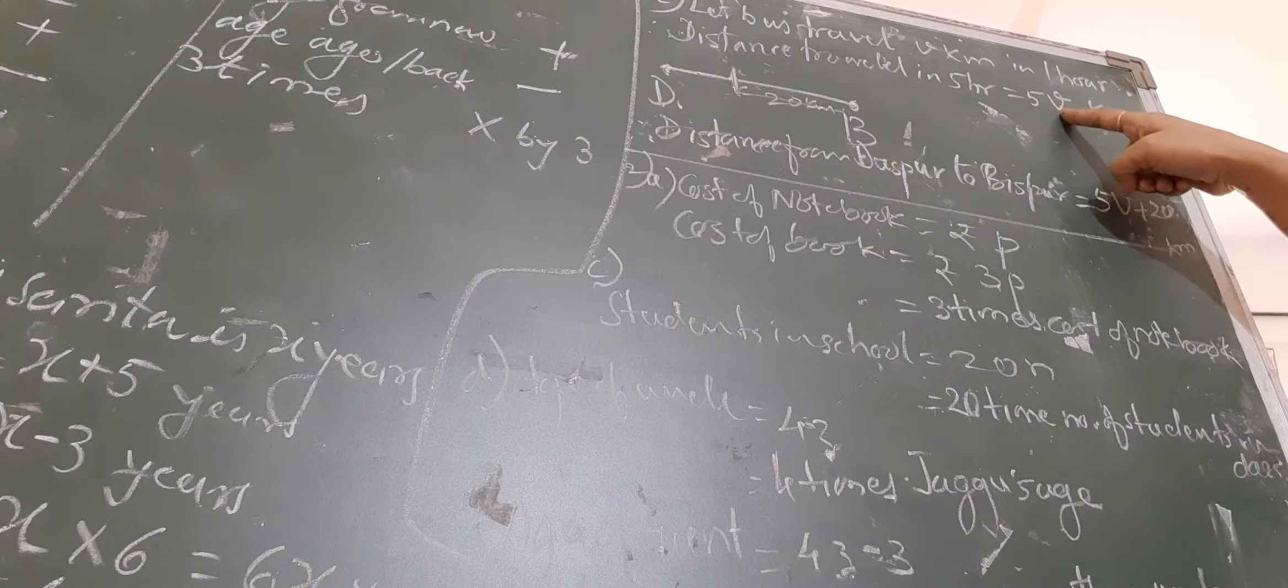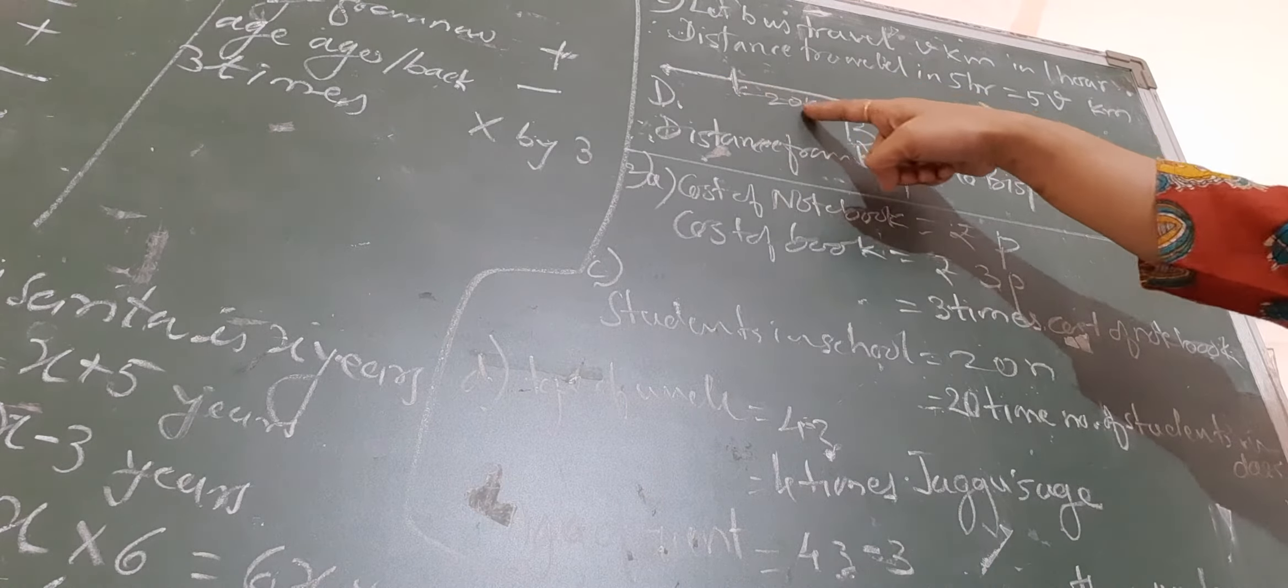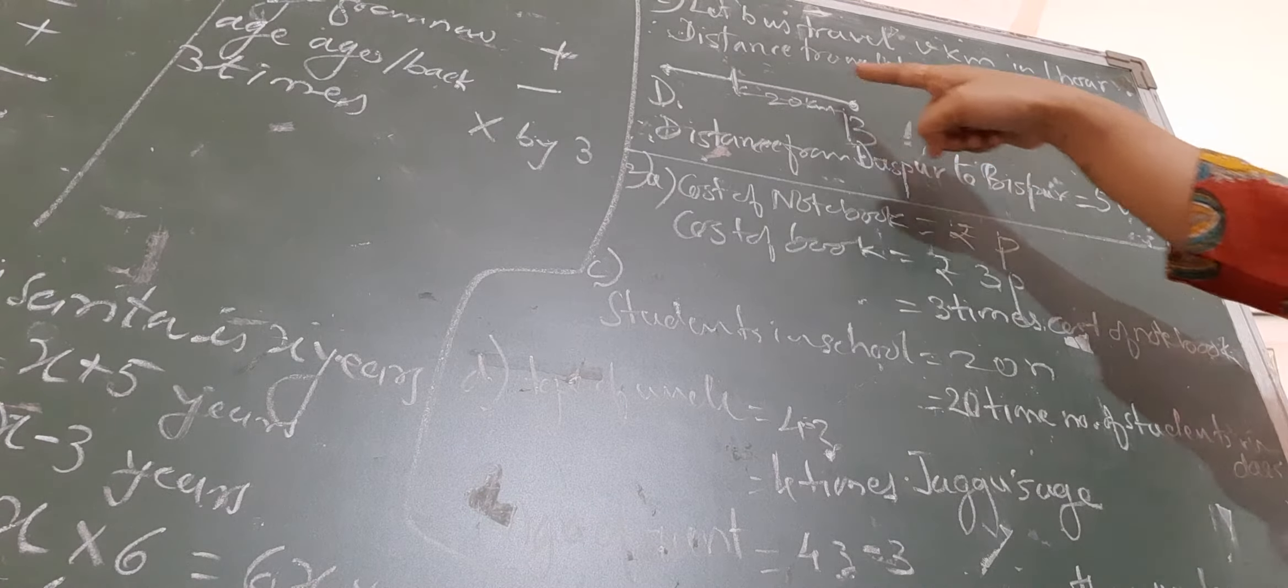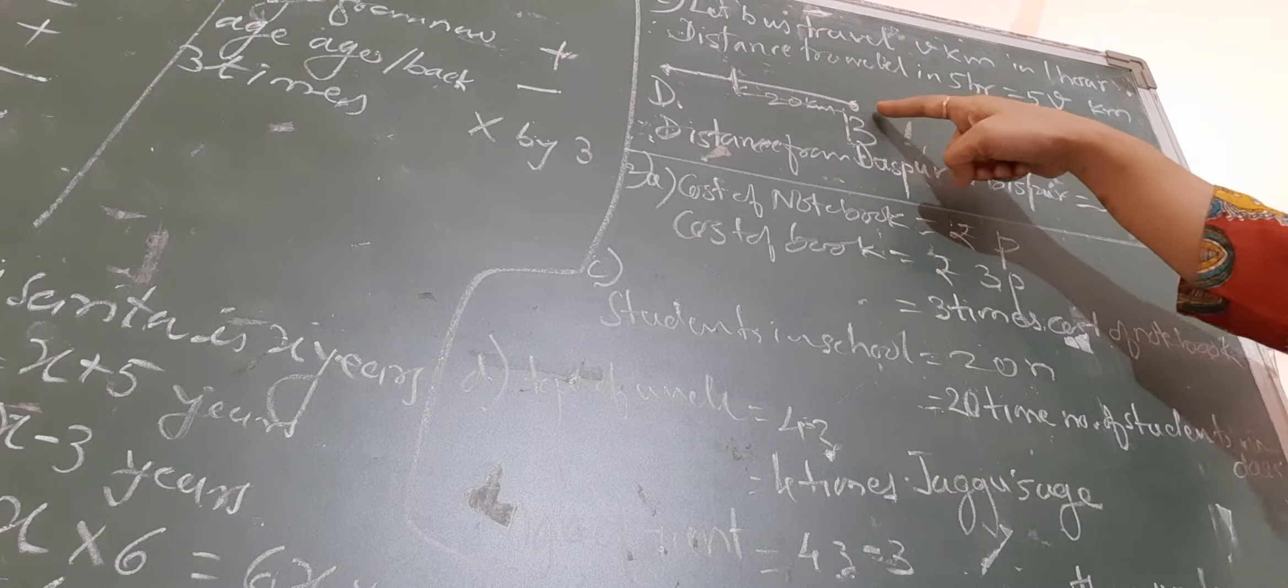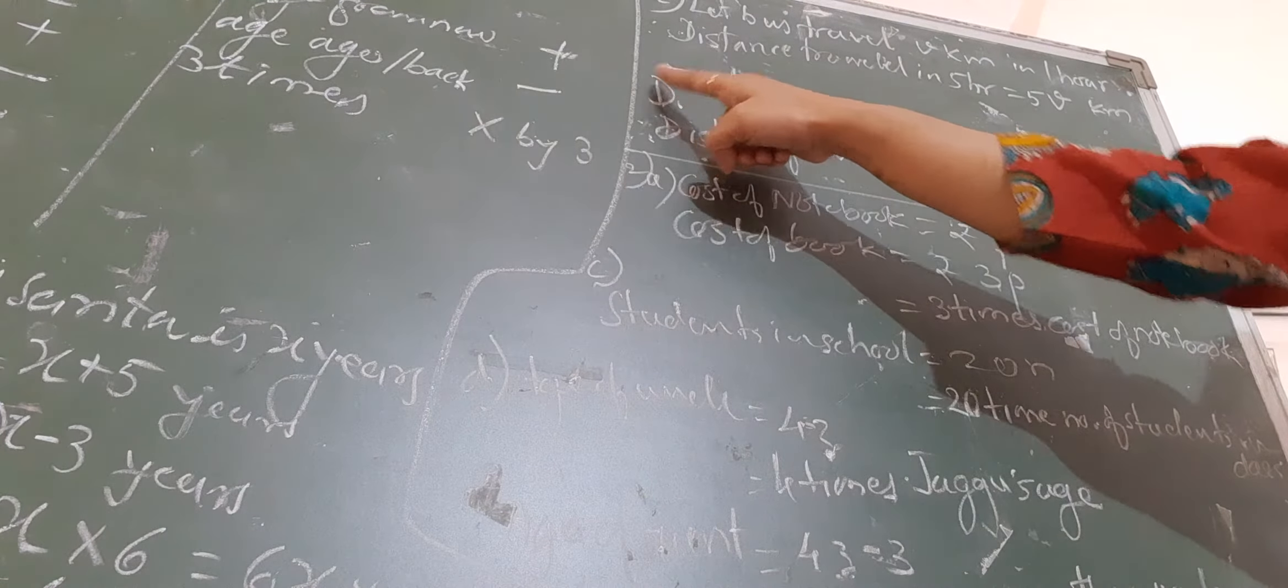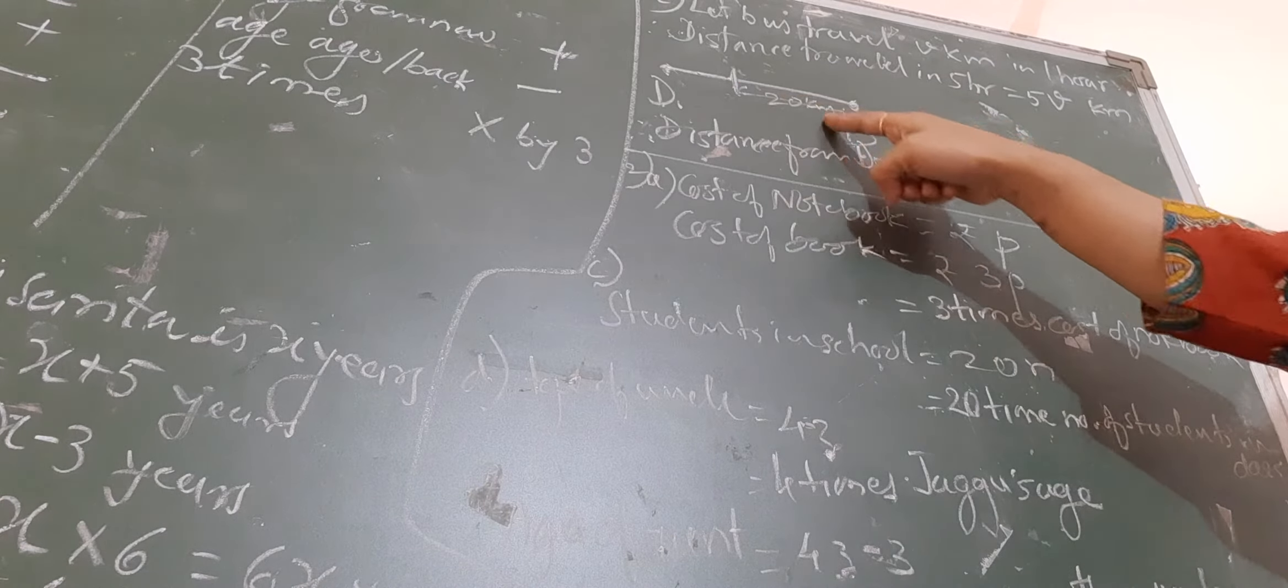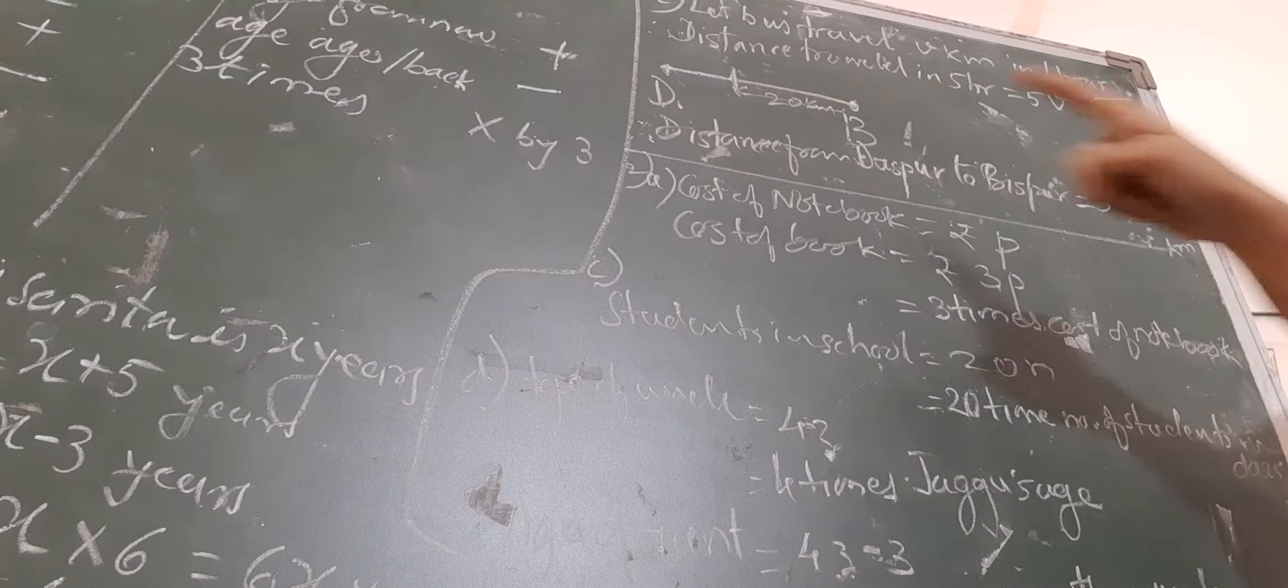It will be 5V kilometers it has traveled. But still, it has to go 20 kilometers to reach the bus stop. It means that 5V plus 20 kilometers it has to go. And hence, the distance to the bus stop is 5V plus 20 kilometers. That will be your answer.